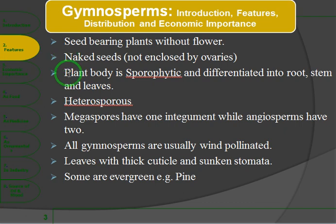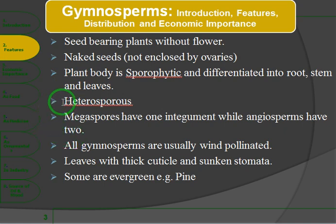The plant body is sporophytic, with differentiated root, stem and leaves. These are heterosporous, meaning they produce two types of spores: microspores and megaspores. Gymnosperms have one integument, whereas angiosperms have two integuments.